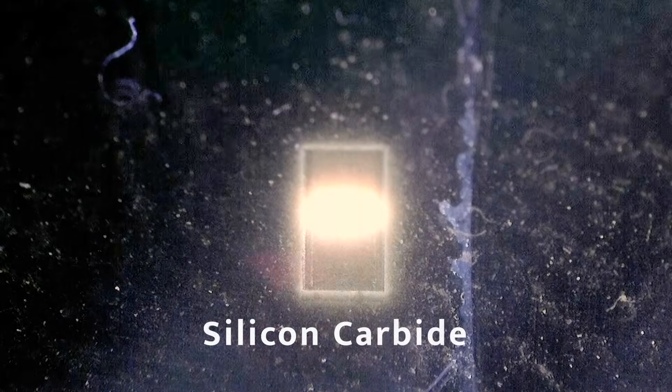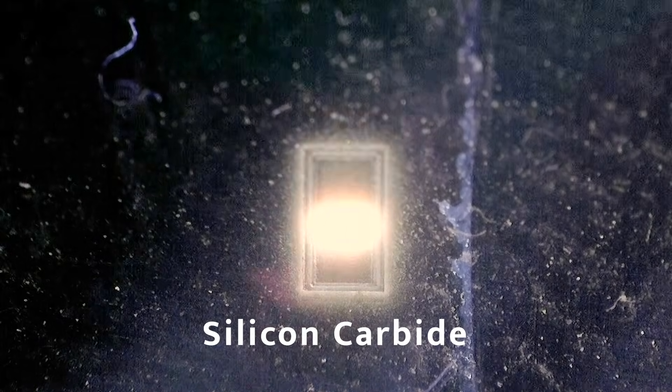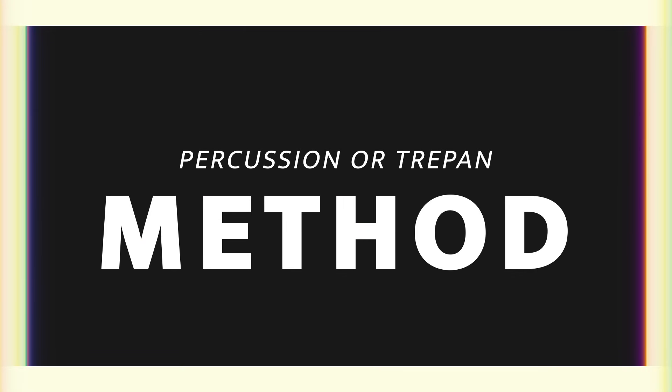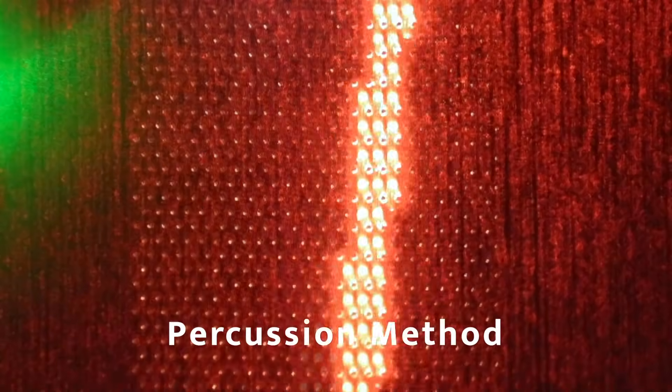Faster lasers increase the rate of material ablation and reduce heat damage found with lasers with less precision capabilities. Holes can be drilled using a percussion or trepan method. Percussion holes are drilled using one or more laser pulses.